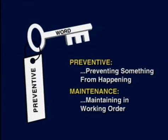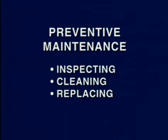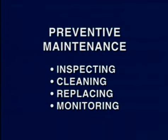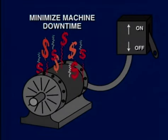If something breaks down, we're not maintaining it — we are repairing it. Preventive maintenance consists of inspecting, cleaning, replacing, and in some cases, monitoring components before they fail or break down. The successful operation of a plant requires minimizing the time a machine is down and avoiding dollars lost to the company.